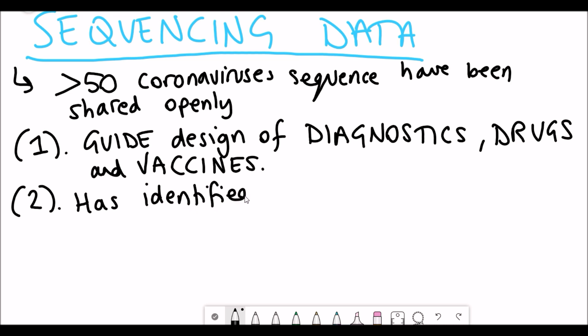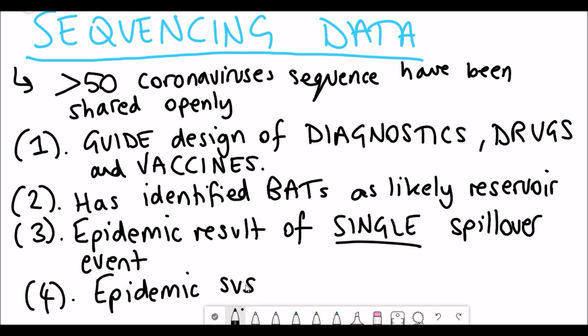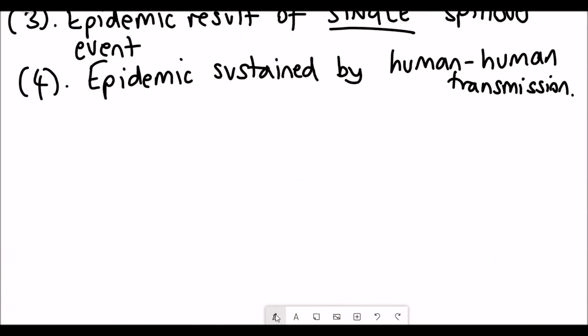This sequencing has also shown that it's most closely related to a coronavirus species that infects bats. So bats are now the likely reservoir for this virus. And it's also shown that the epidemic has been the result of a single spillover event. And also by tracking how the viral genome has mutated over time, we can see that the epidemic is sustained by human-human transmission.